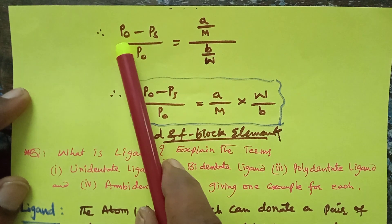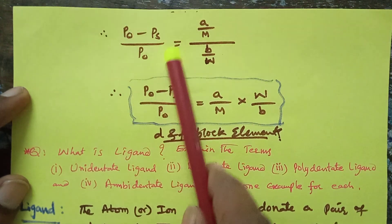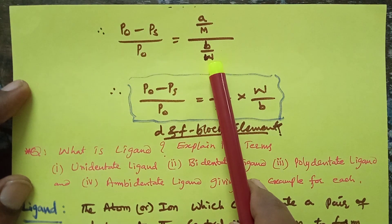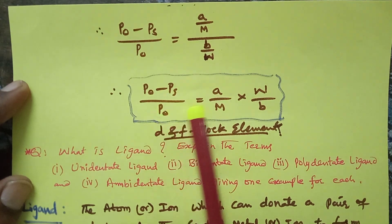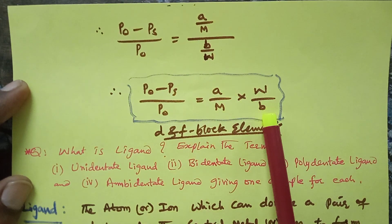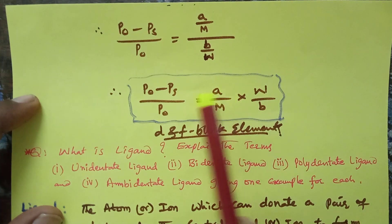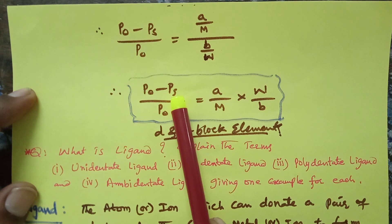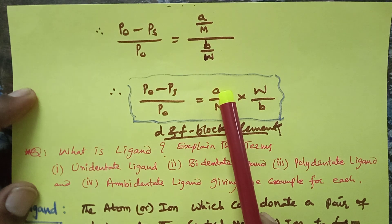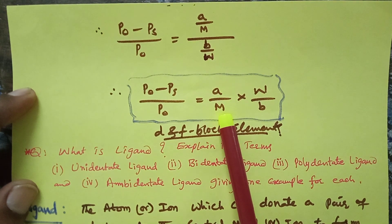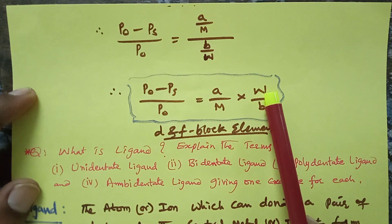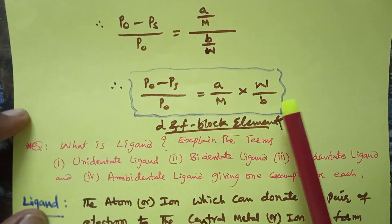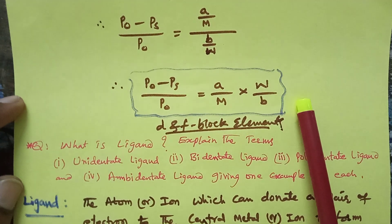This can also be written as: (P⁰ − Ps) / P⁰ = (a / M) × (W / b), where P⁰ is the vapor pressure of pure solvent, Ps is the vapor pressure of the solution, a is the weight of solute, M is the molecular weight of solute, W is the molecular weight of solvent, and b is the weight of solvent. Using this formula we can determine the molecular weight of the solute.